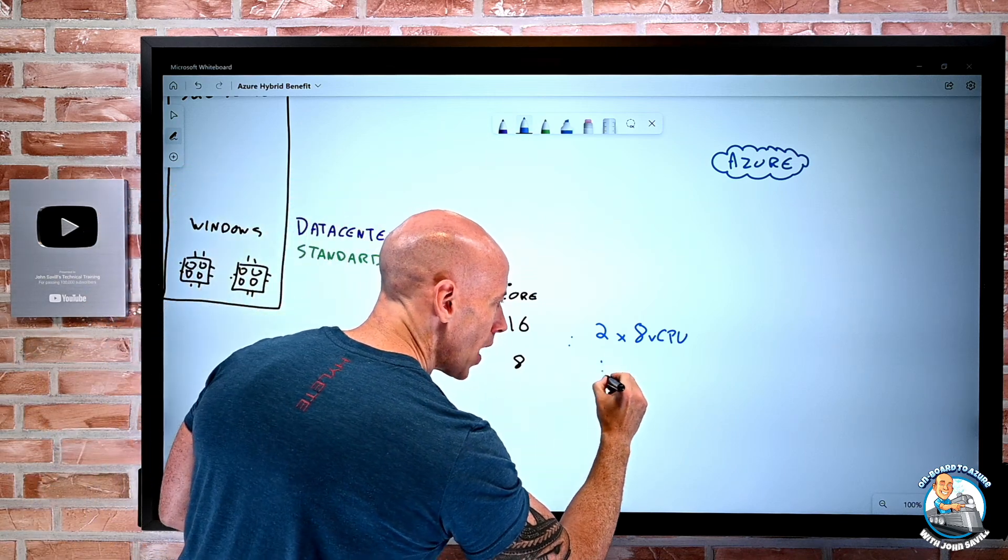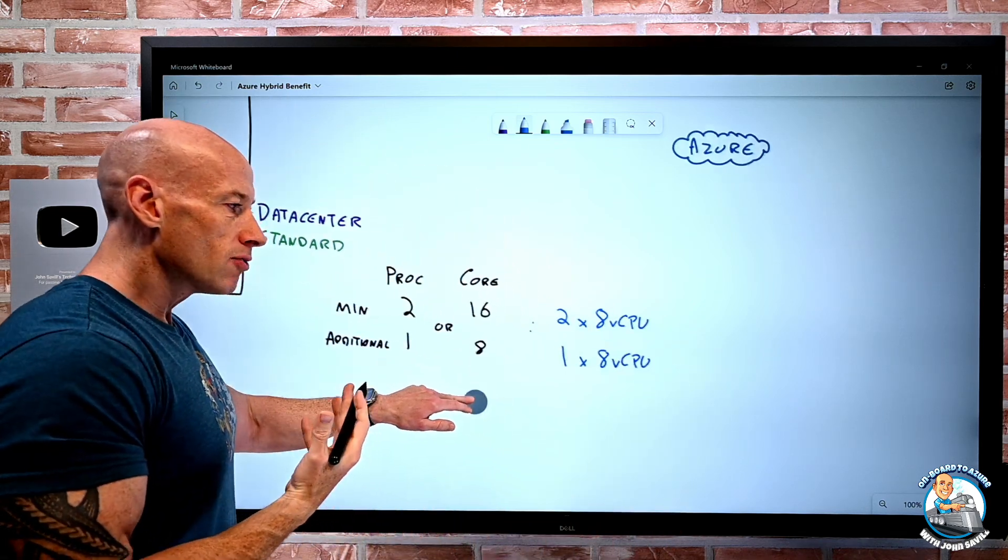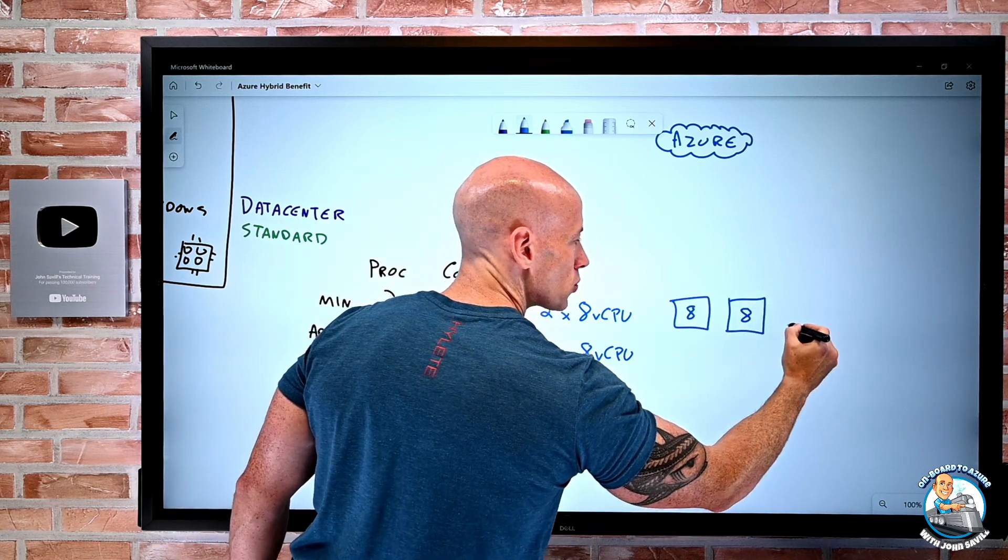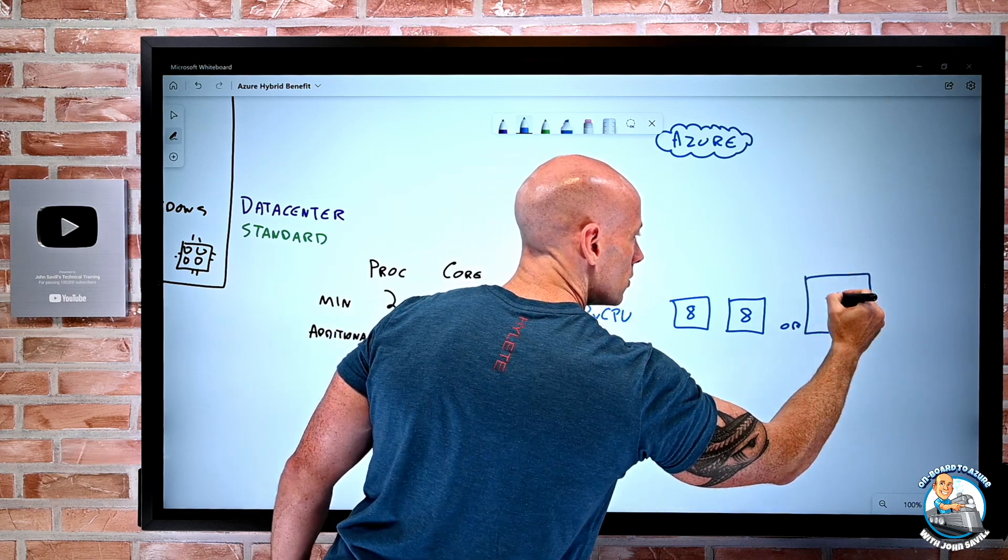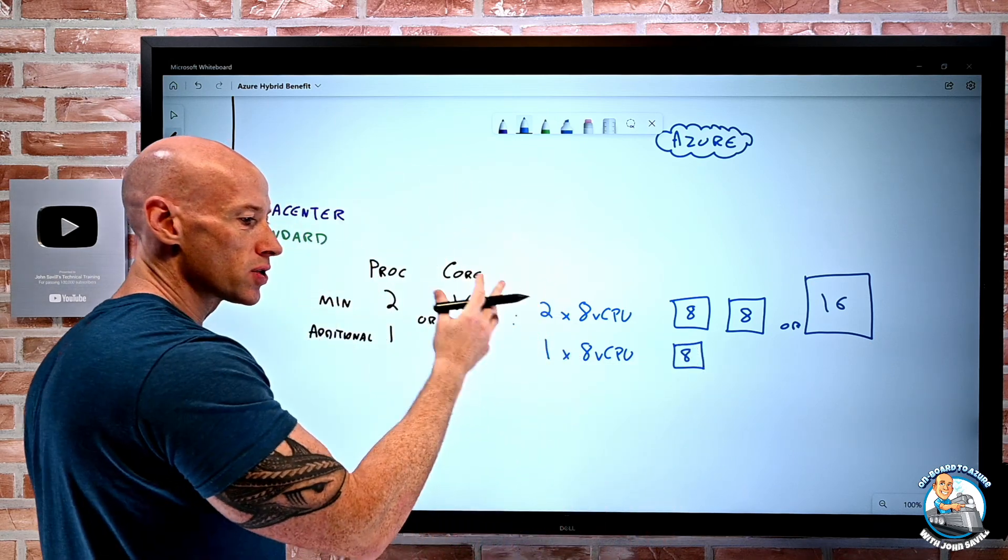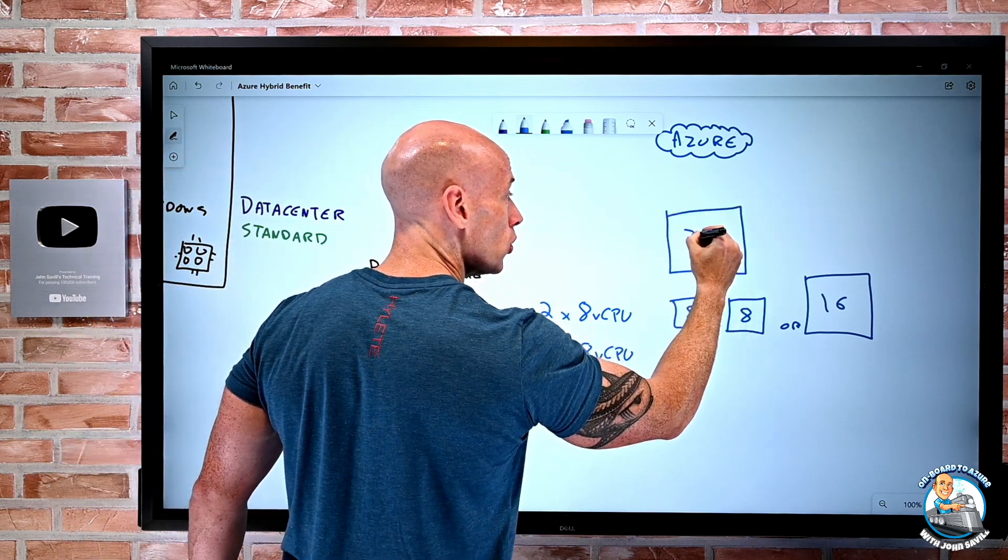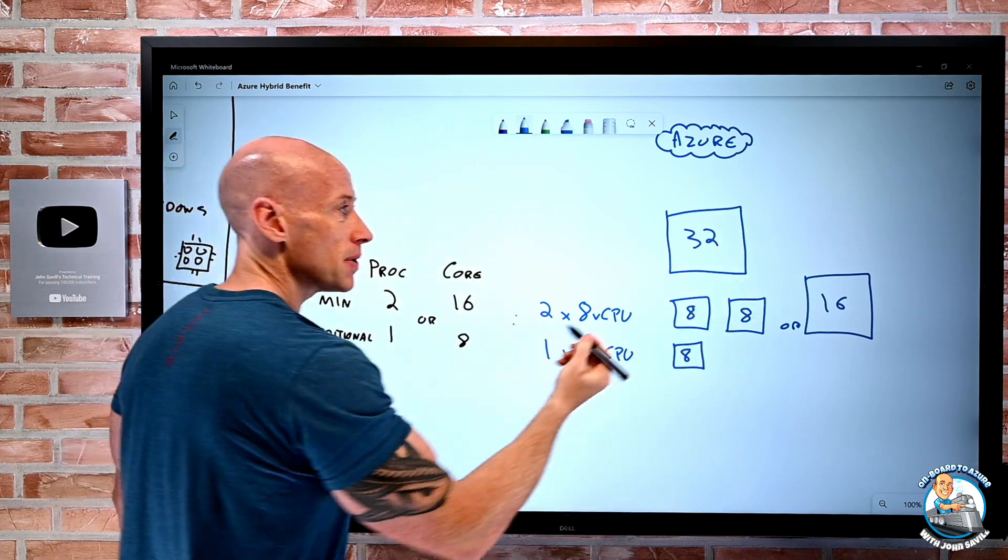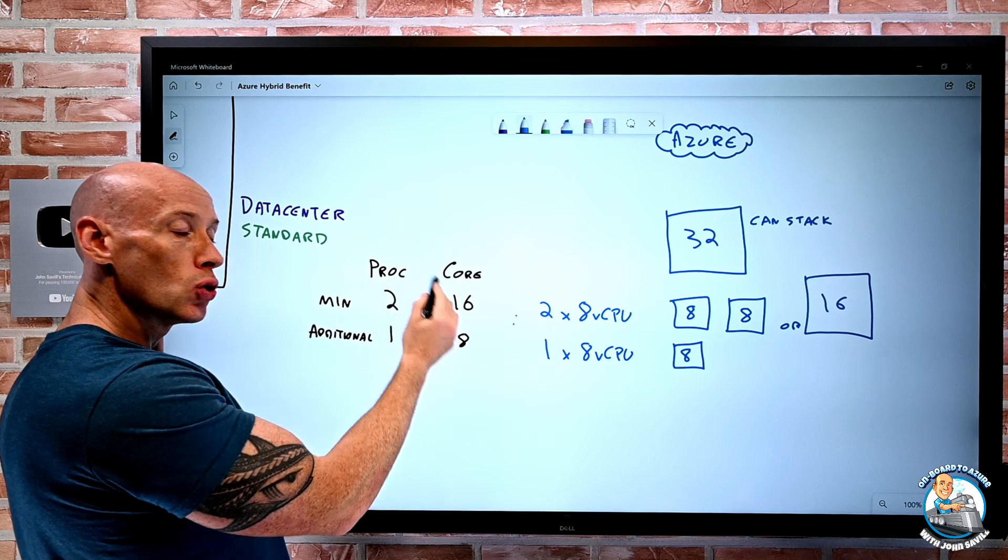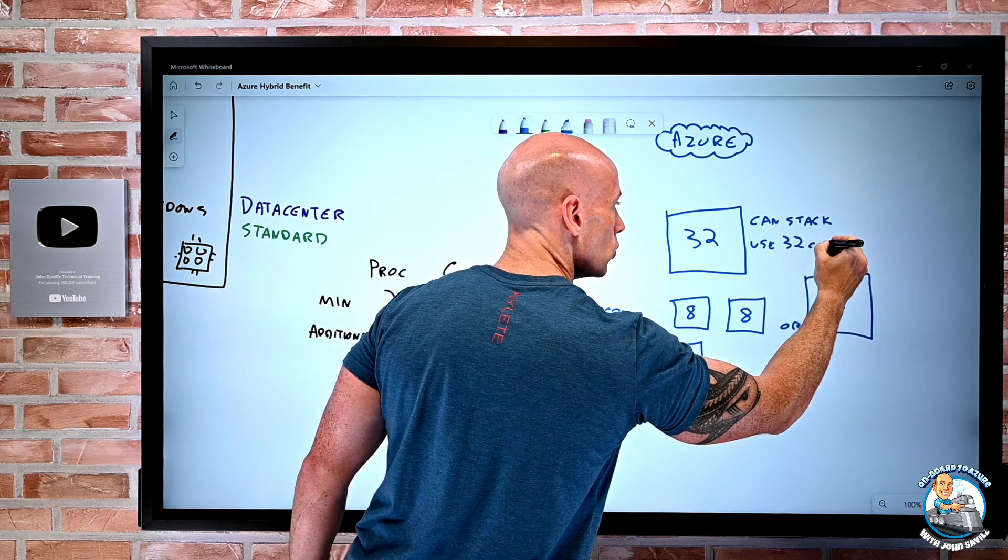For every additional set, it's one eight virtual CPU virtual machine. So I can really leverage this. I could create a VM with eight virtual CPUs, another one with eight virtual CPUs, or one with 16. I can create one with eight for each additional set. I could stack them. I could absolutely create a virtual machine with 32 virtual CPUs, because yes, I can do that stacking. But this would require 32 cores worth of on-premises license.